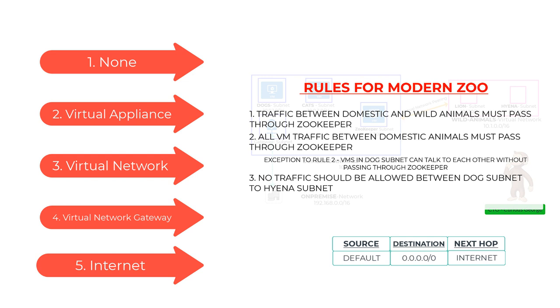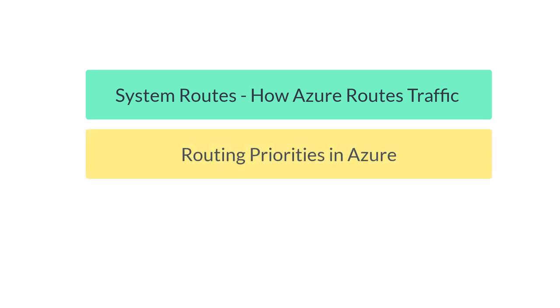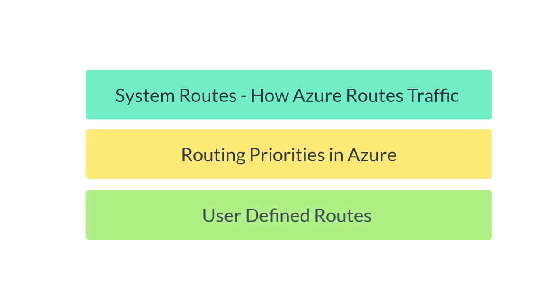Just to recap what we discussed: the first concept was how Azure routes traffic by default using system routes. Second, how routing priorities work in Azure. Number three, what is a user defined route and how we can use it to our advantage. If you want to understand more about special cases like service endpoints and how that changes routing, please check out the video on service endpoints by clicking on the link above. Thank you for watching — I will see you again in the next video.